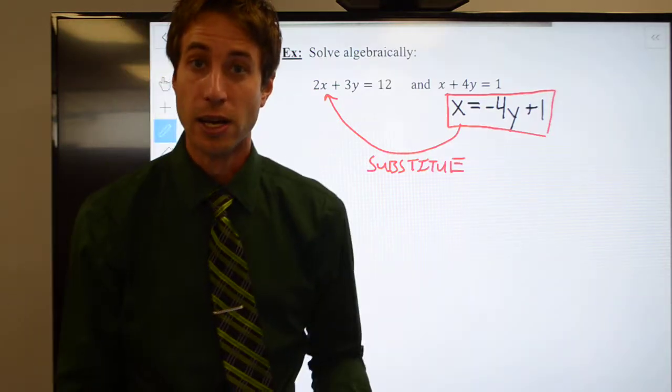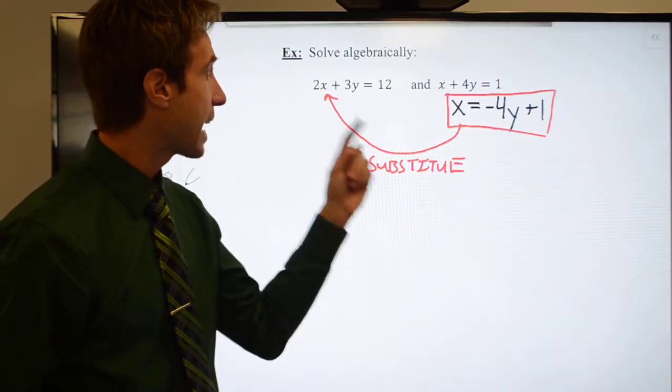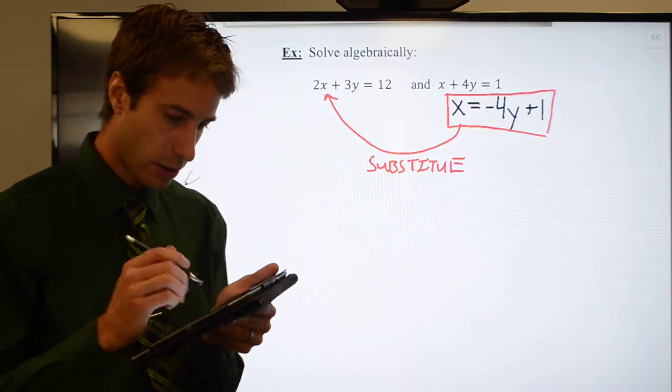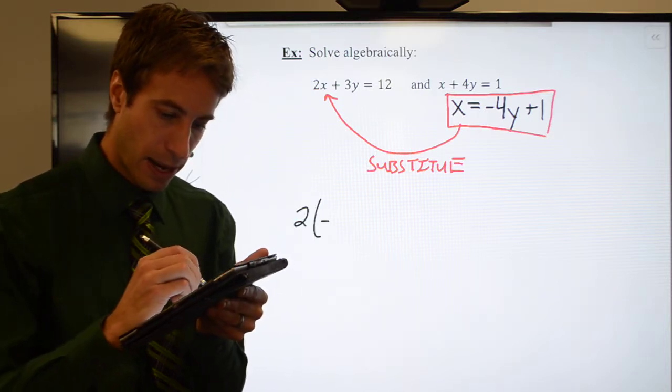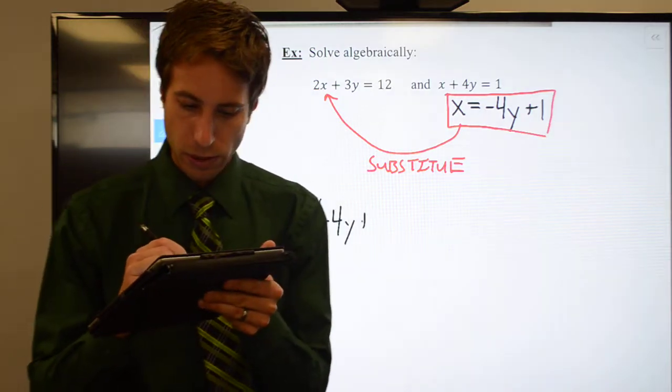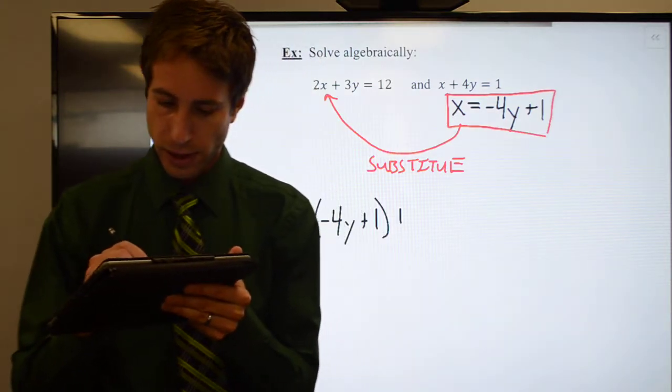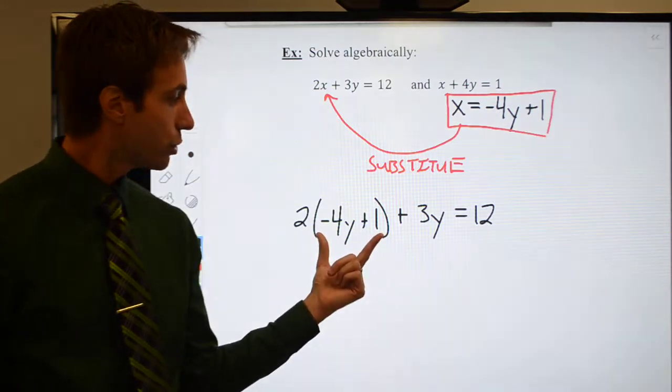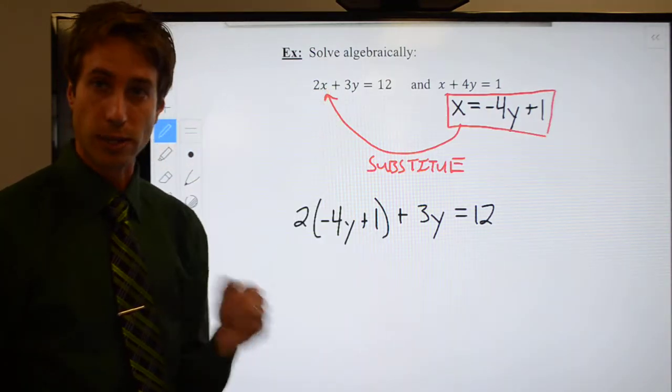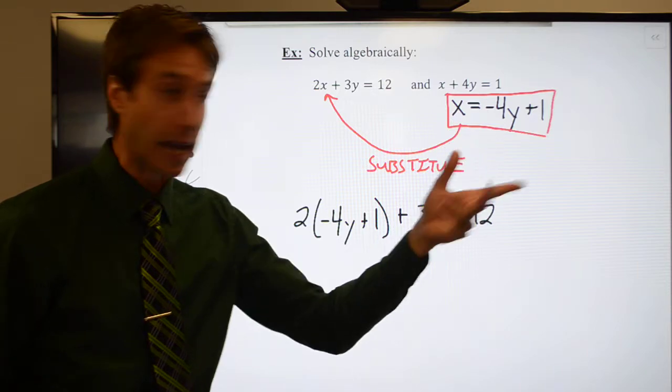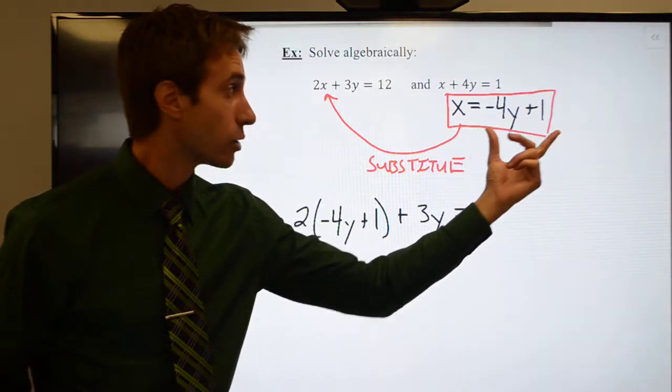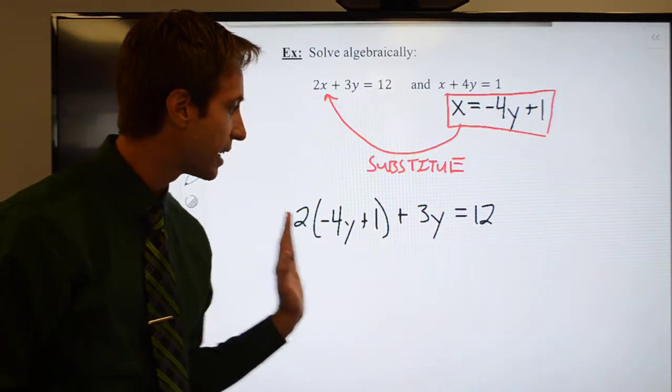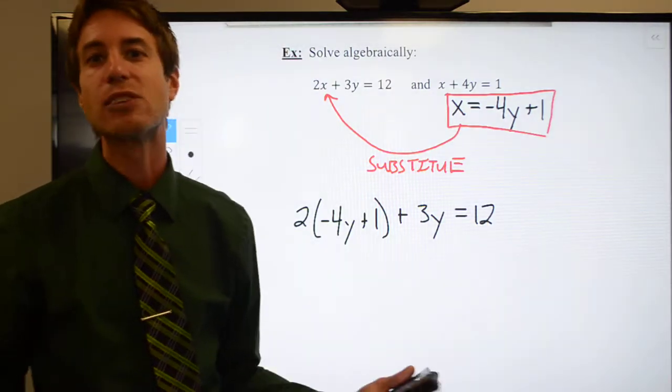I'm going to now substitute what I just found for x. Hence why we call it substitution. For this x, I'm going to plug in negative 4y plus 1. So let's do that. 2 multiplied by negative 4y plus 1 plus 3y is equal to 12. This used to be where my x was. But I know what x is equal to. I solved for it over here. So I just take that, I plug it in for x, and now what I have is an equation that only has y's in it.